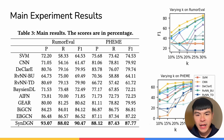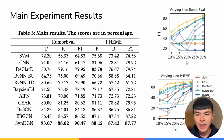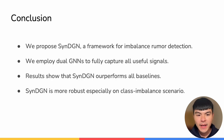We also conduct analysis on the ratio of the rumor class versus non-rumor class, because in the real world, rumor class appears much less frequently than the non-rumor class. We show that SynthDGN consistently outperforms all of the baselines regardless of this ratio, showcasing a much more robust system.